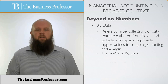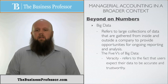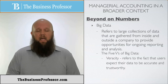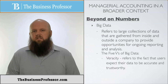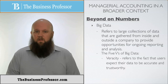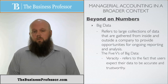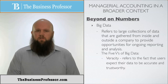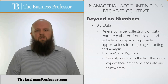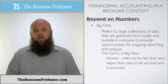The fifth one is what we call veracity. This refers to the fact that users expect their data to be accurate and trustworthy. It's not something that's made up — it needs to reflect what your stakeholders see. If it doesn't, then they're not going to trust it, and therefore they're not going to trust your decisions. So these are the five V's of managerial accounting and big data.